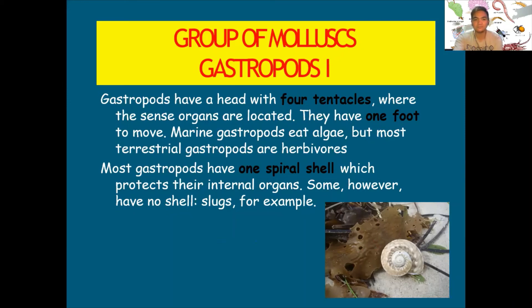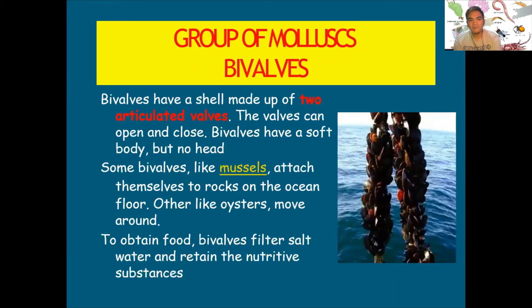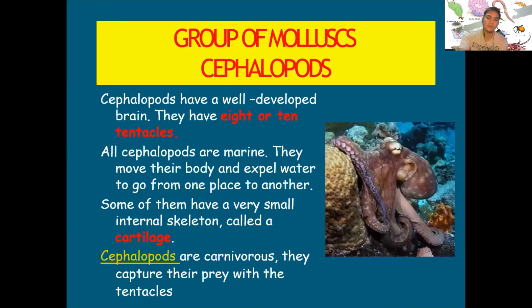Bivalves have a shell made up of two articulated valves that can open and close. They have a soft body but no head. Some bivalves, like mussels, attach themselves to rocks in the ocean, while others like oysters move around. They obtain their food by filtering salt water and retaining the nutritive substances.